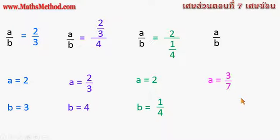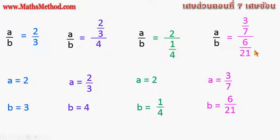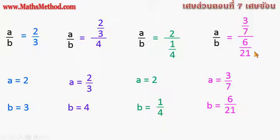If A is 3.7 and B is 6.21, then A over B is 3.7 over 6.21. This is a complex fraction, or a nested fraction.